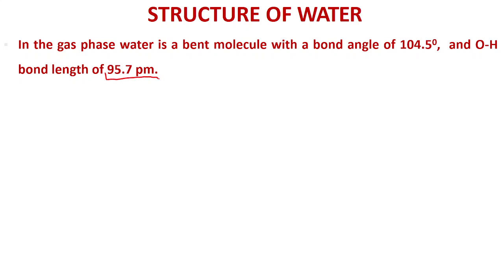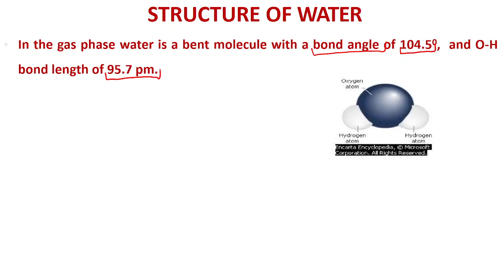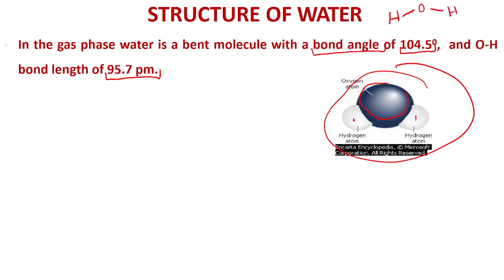Bond angle and bond length are concepts you will understand fully in Chapter 4. For now, the key point is that the oxygen atom and two hydrogen atoms form a tilted or bent structure. The angle between the two O–H bonds is 104.5 degrees, and the distance from hydrogen to oxygen — the bond length — is 95.7 picometers.